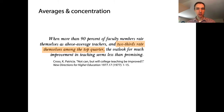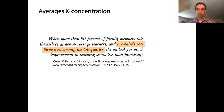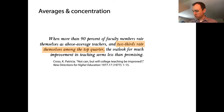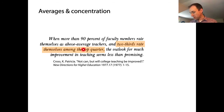Let's take a look at a statement from an academic study: when more than 90% of faculty members rate themselves as above average teachers and two-thirds rate themselves among the top quarter, the outlook for much improvement in teaching seems less than promising. There are two statements about a data set here.